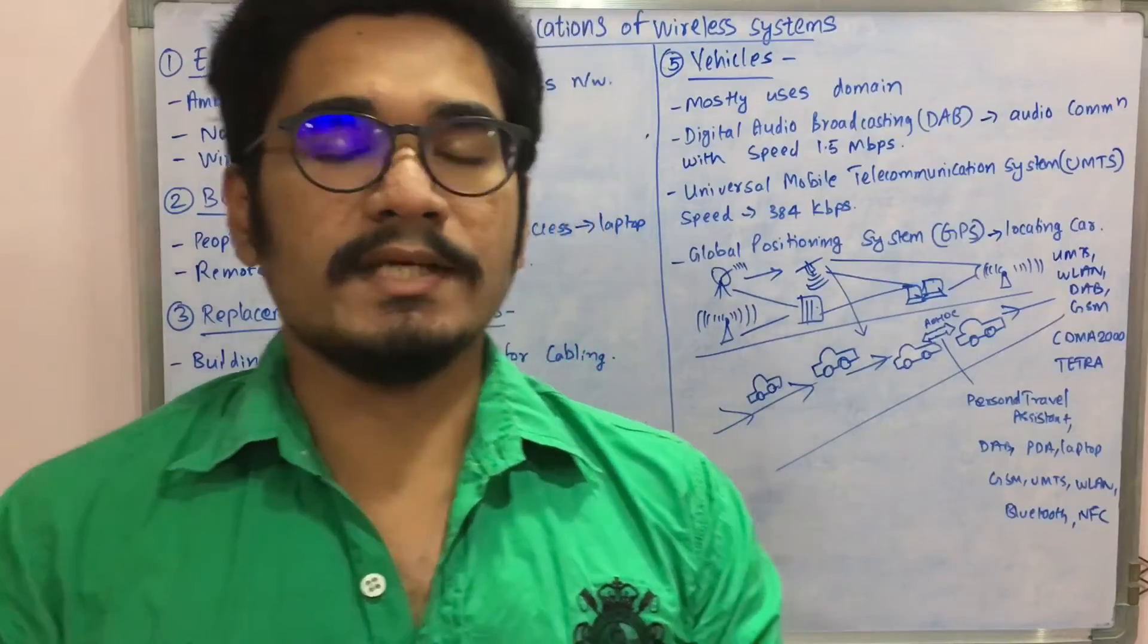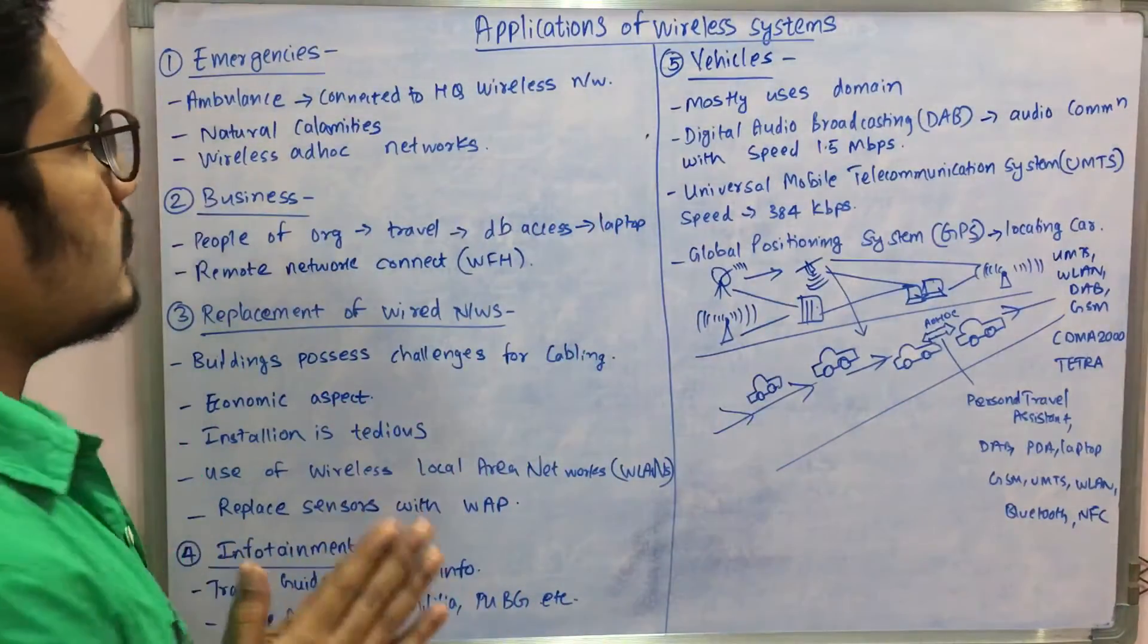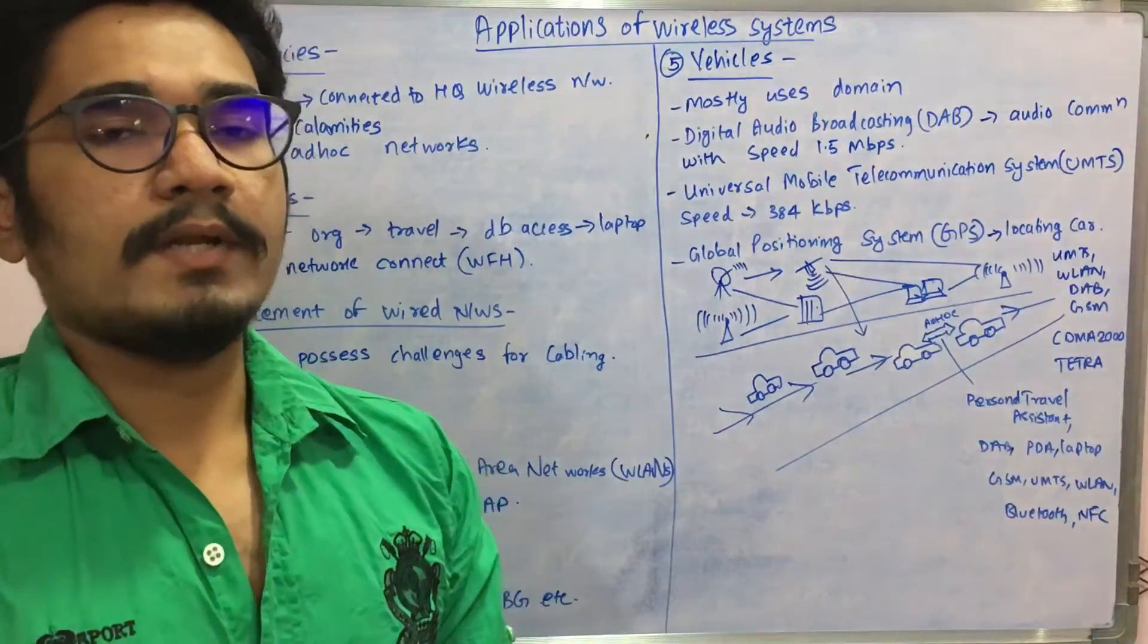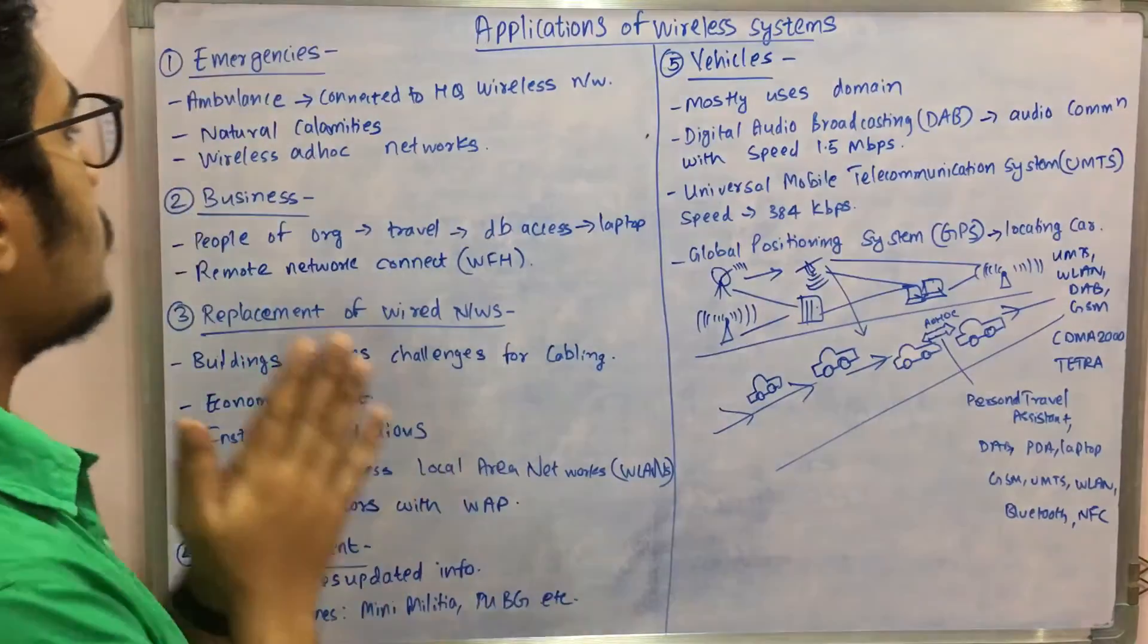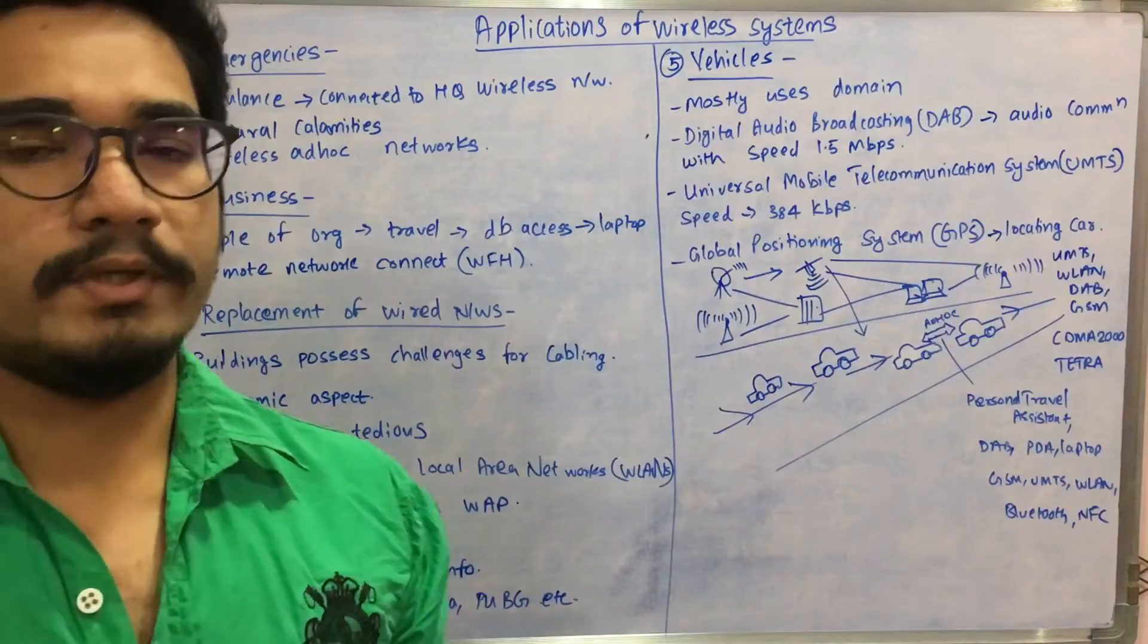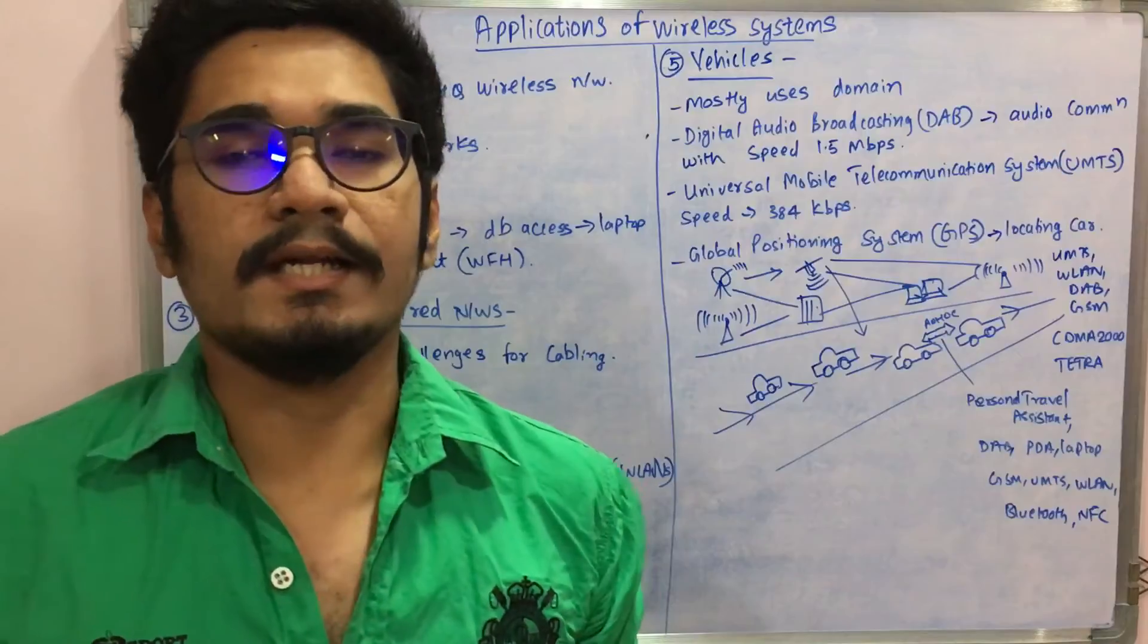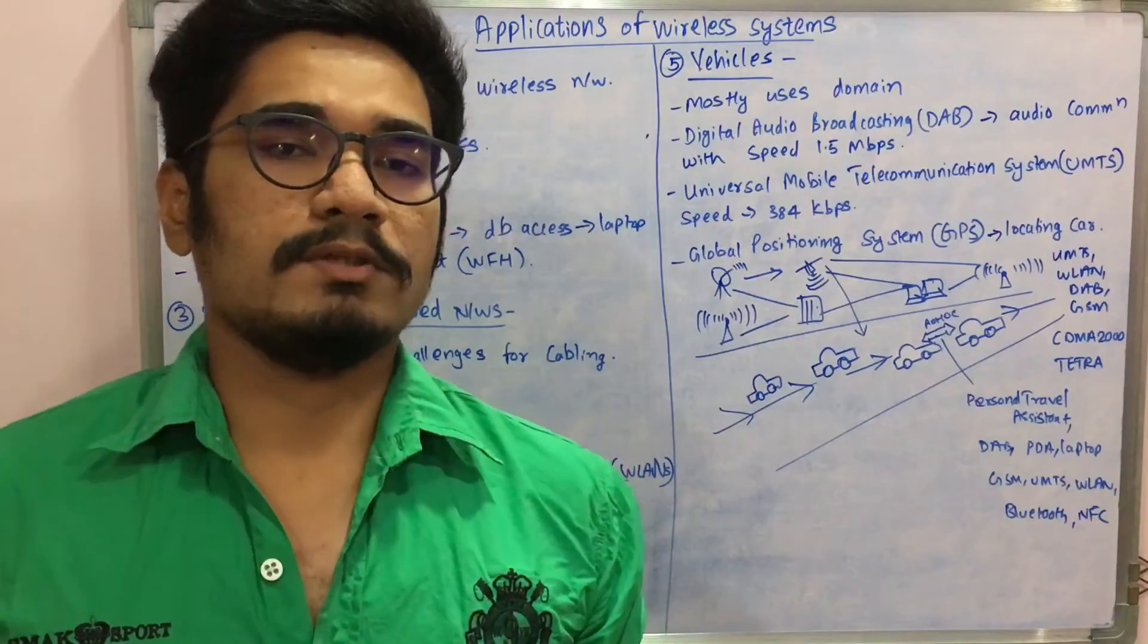The first place where wireless systems are used is in emergencies. For example, if somebody has an accident, you have an ambulance connected to a high quality wireless network. It will update all the information to the hospital, so all the relevant information would be updated. This is essential for designing IoT systems where wireless systems are an essential factor.